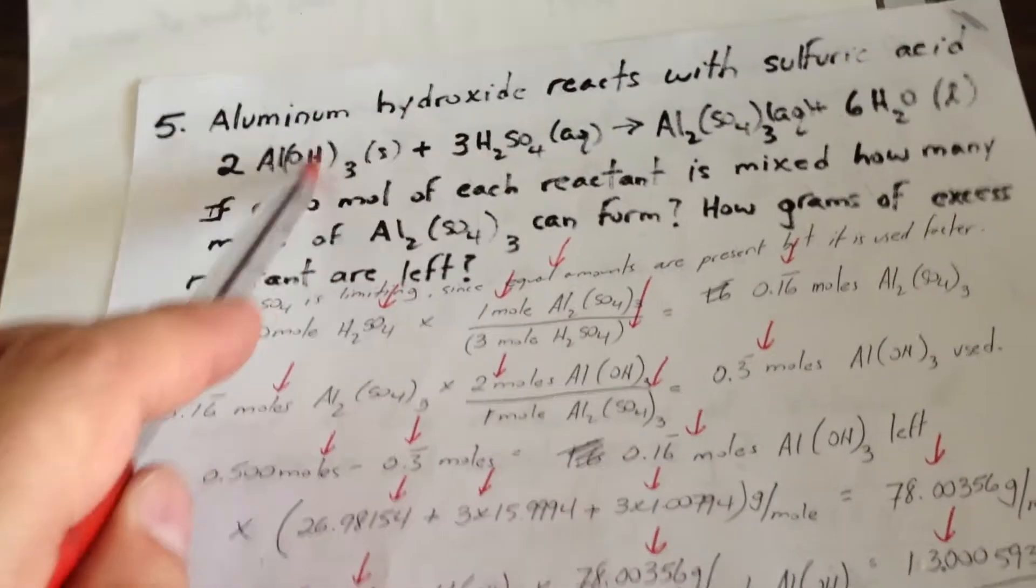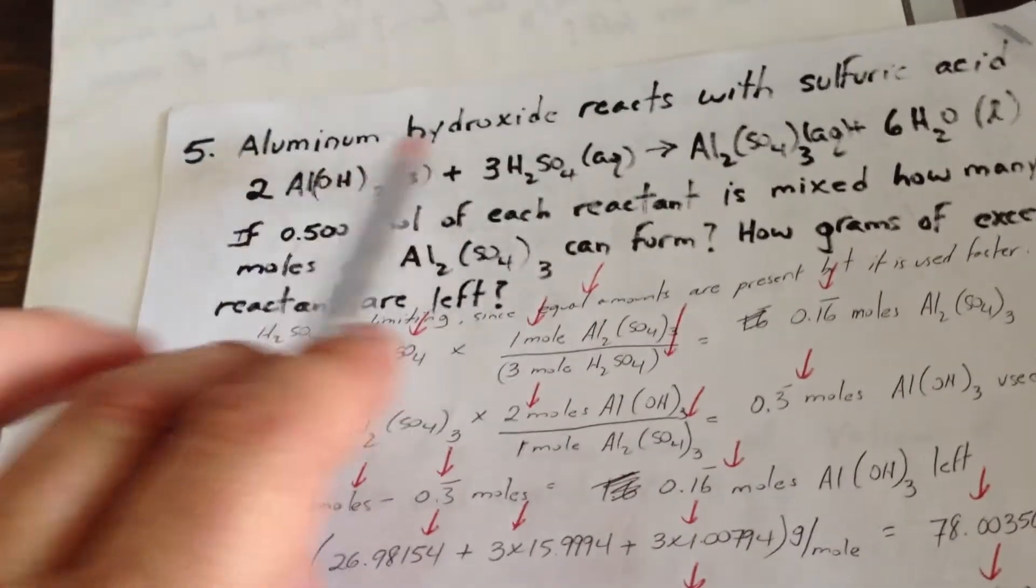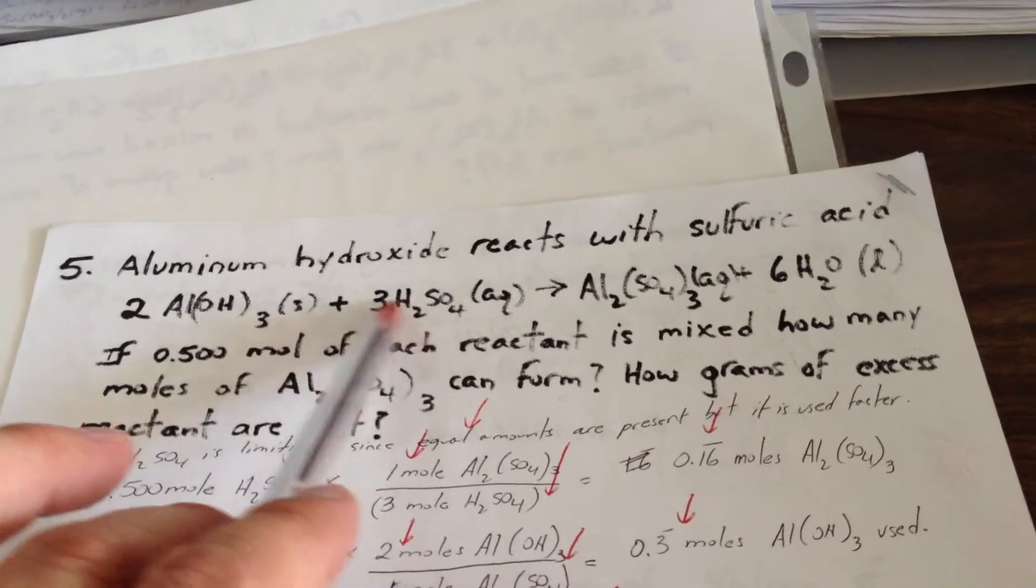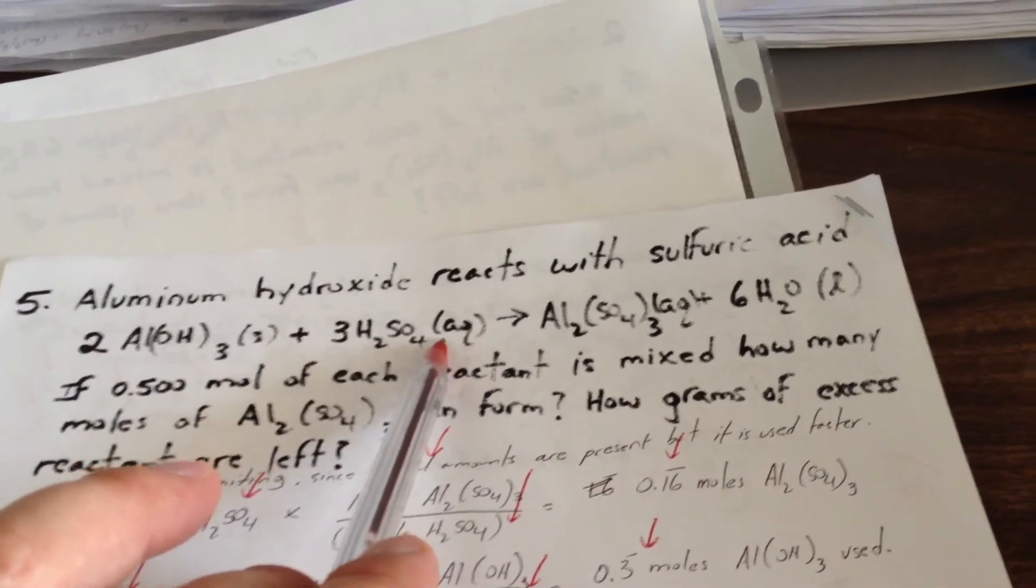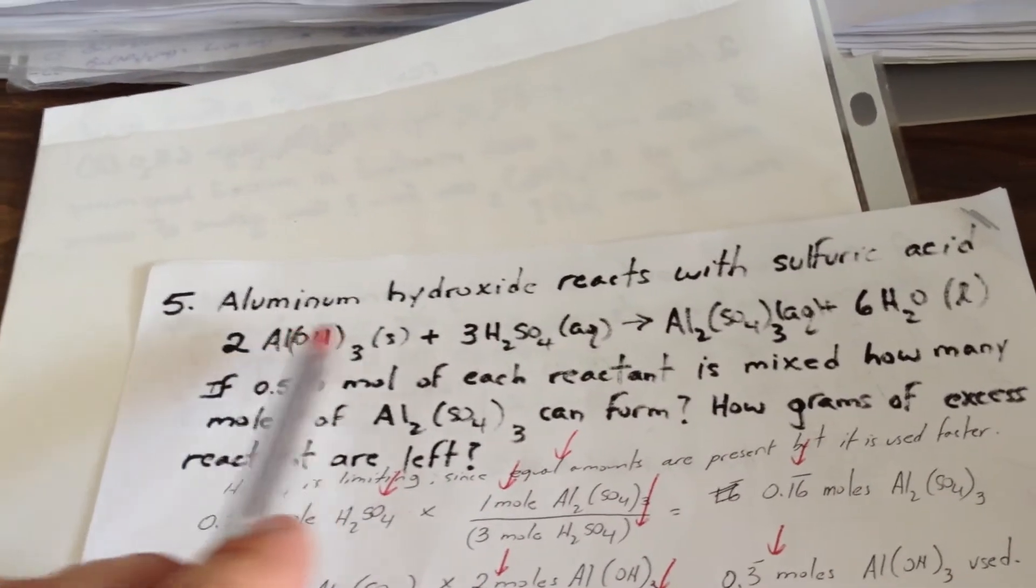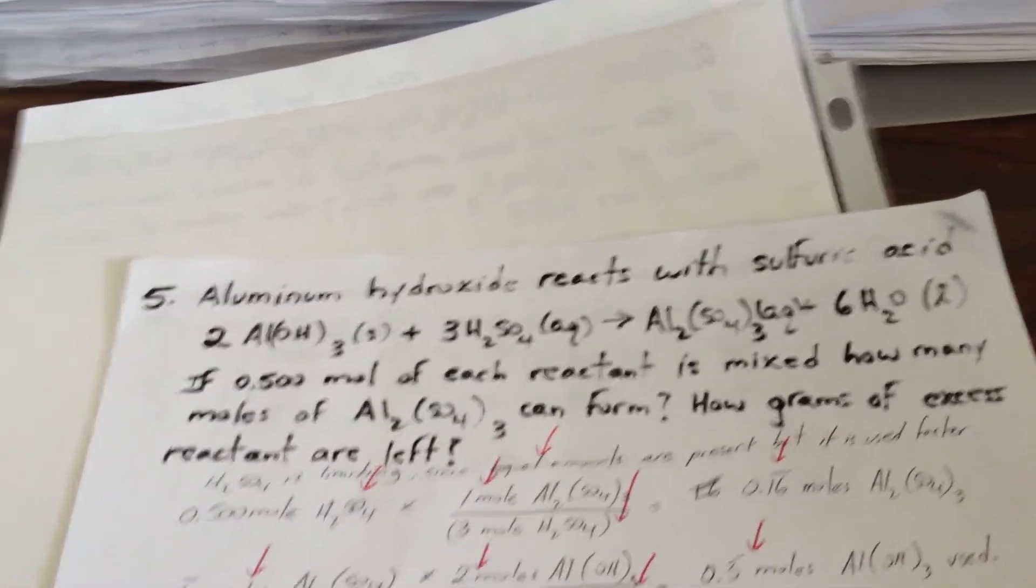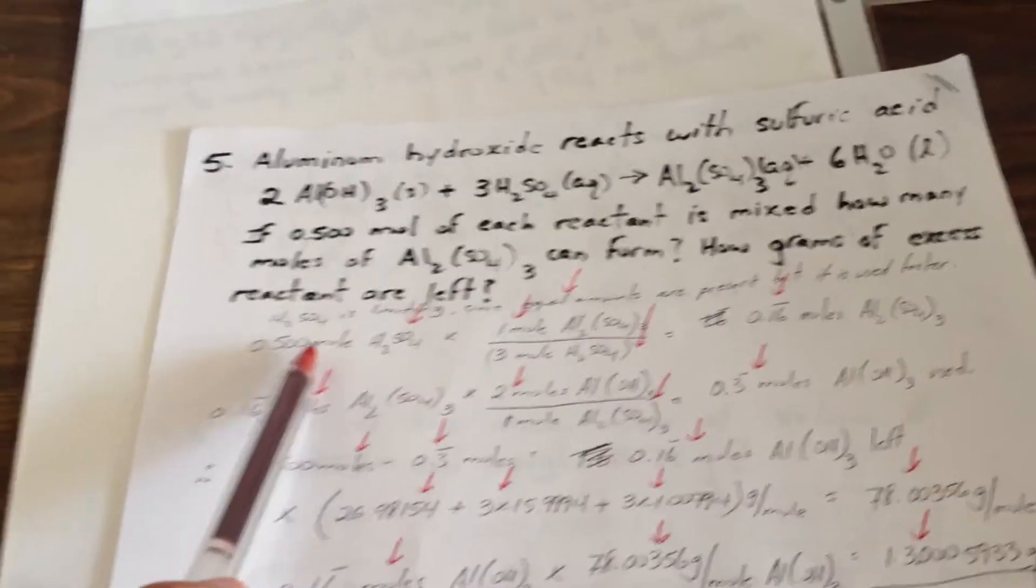which one of these two is the limiting reagent. If we have equal number of moles, the one that's used faster is going to be the limiting reagent. In this case, sulfuric acid requires 3 moles for every 2 moles of aluminum hydroxide. So having equal moles will determine that sulfuric acid will finish first. So we start our calculation from sulfuric acid.